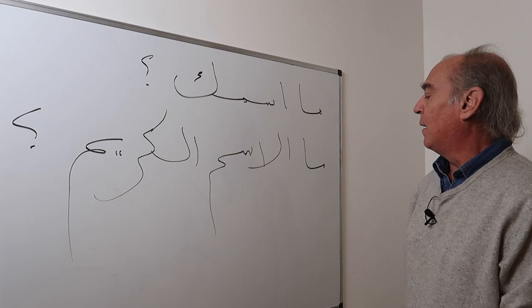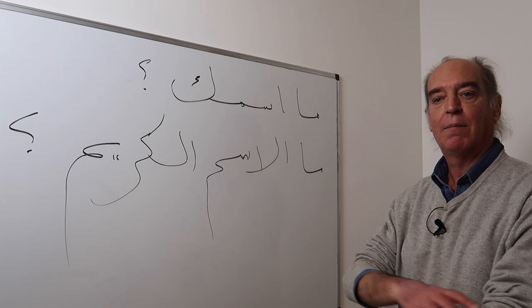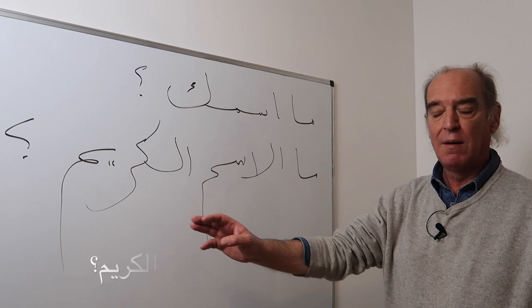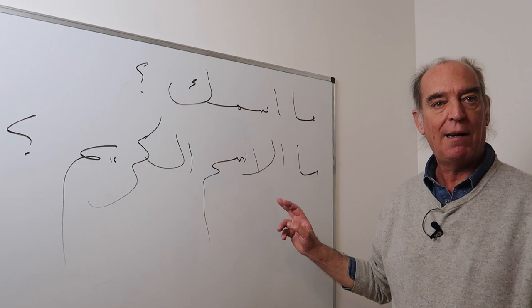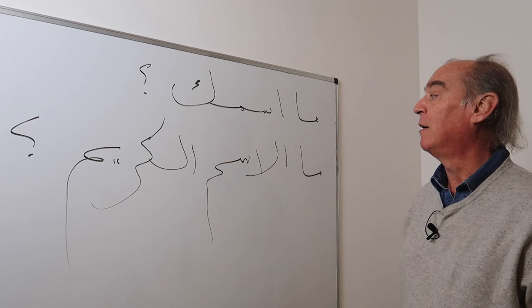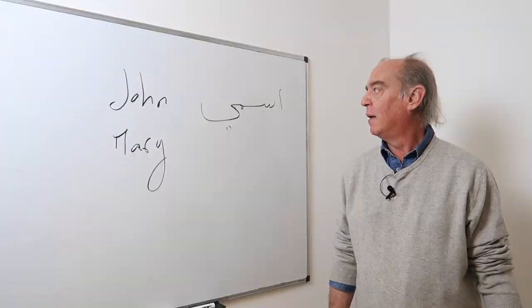So 'Ma ismuka' means 'What's your name?' A more polite form, if you're speaking with a teacher or someone you don't know, is 'Ma lismu al-karim' — meaning 'What is the noble name?' or 'What is the generous name?' — yours, naturally. 'Ma lismu al-karim.'